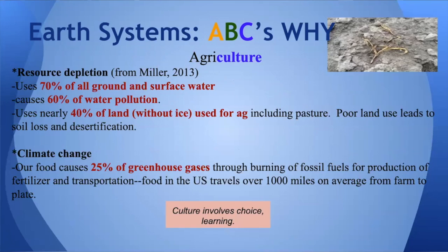The last of the ABCs — the C — is culture: how we as humans impact the A's and B's, and how we impact each other. Here are some really important statistics. Through agriculture we utilize 70% of all the ground and surface water on the planet, cause 60% of water pollution, and use 40% of our usable land. Not all of those are necessarily bad things, except for the water pollution part — but the way we do agriculture makes an impact on all of them.